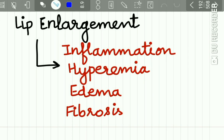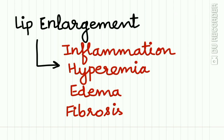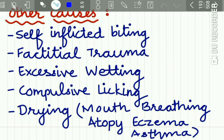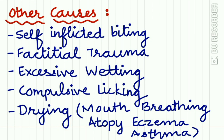The etiology of Cheilitis Glandularis is mostly chronic irritation. Chronic irritation results in lip enlargement which causes inflammation, hyperemia, edema, and fibrosis. Other causes include self-inflicted biting, factitial trauma, excessive wetting, compulsive licking and drying of the lips due to mouth breathing, atopy, eczema, and asthma.